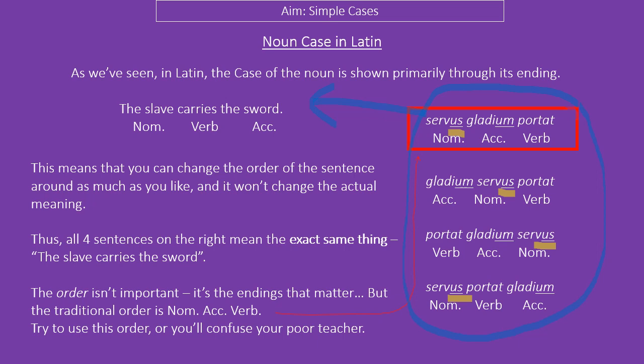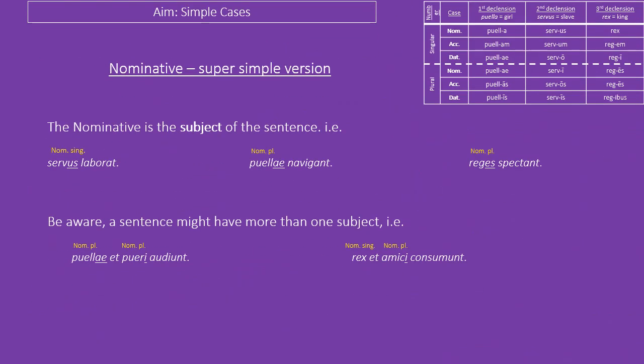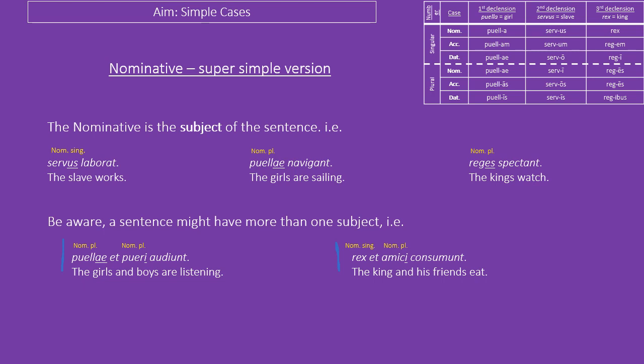Saying that, there is more or less a correct order. It doesn't make a difference in terms of meaning at this level, but please try to learn that the general order in Latin is nominative, followed by accusative, followed by verb — the verb tends to go at the end. So the nominative is the subject of the sentence. We can see examples: servus laborat — he is doing something; puellae navigant — the girls are sailing; reges spectant — the kings are watching. You might also have sentences with more than one subject — the puellae and the pueri are both listening, or the rex and his amici are both eating. We can have more than one subject, but they're all doing the verb.